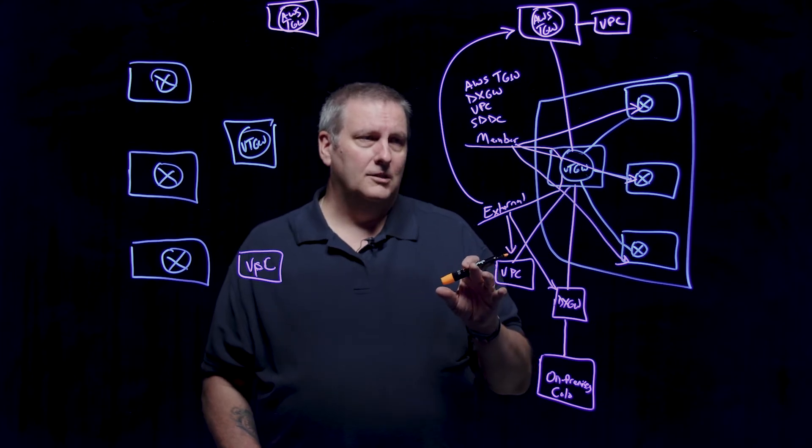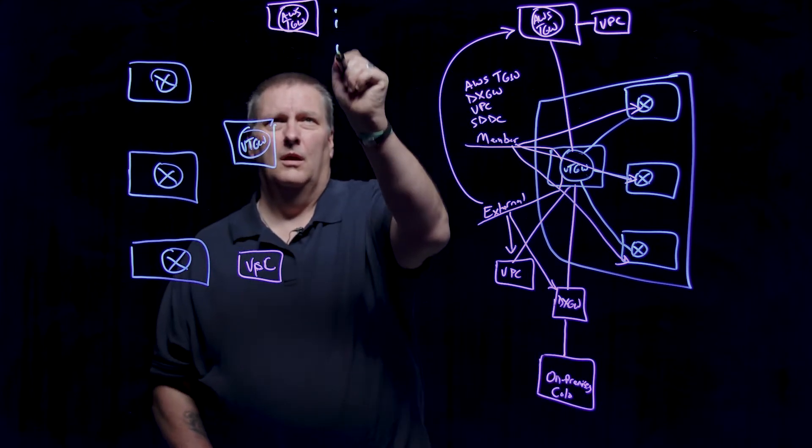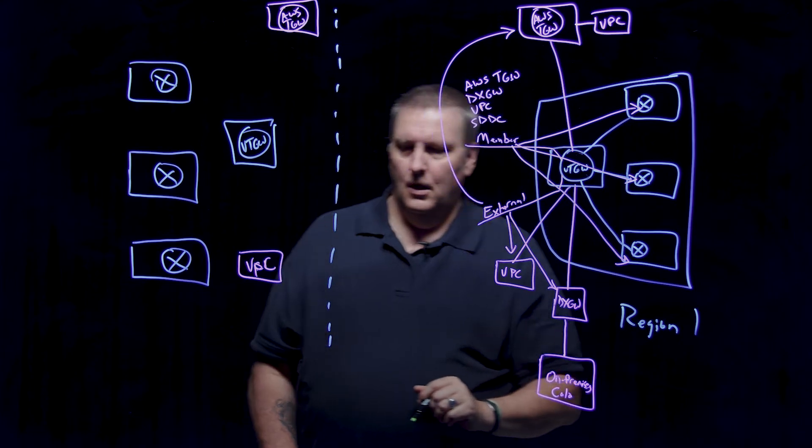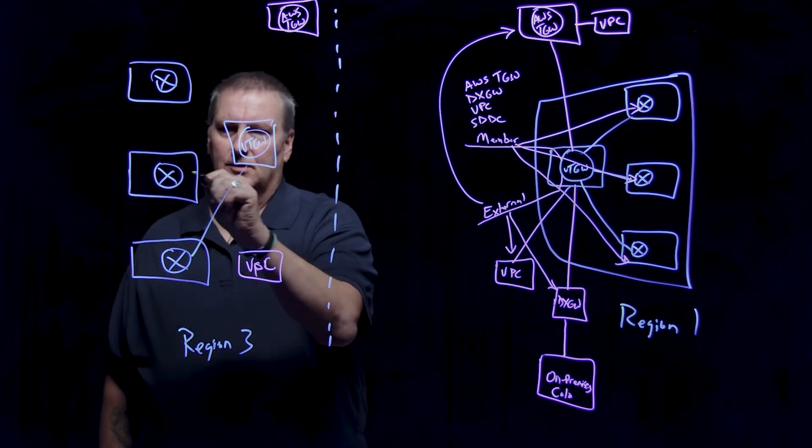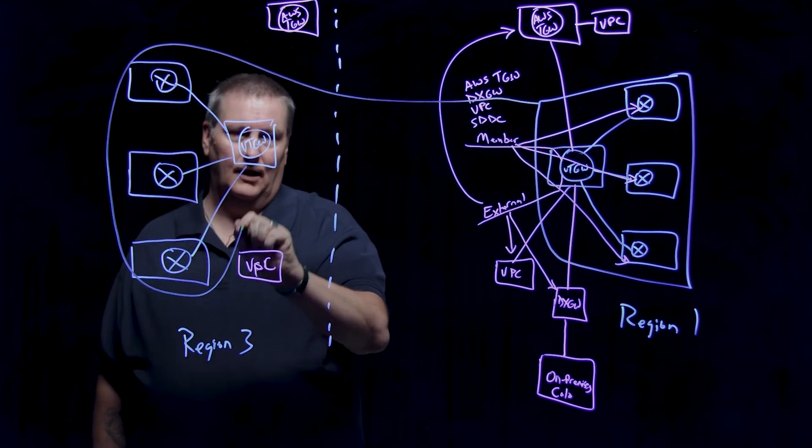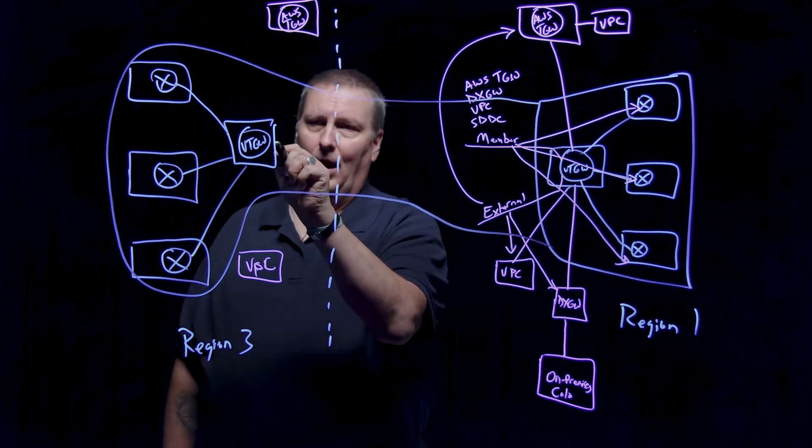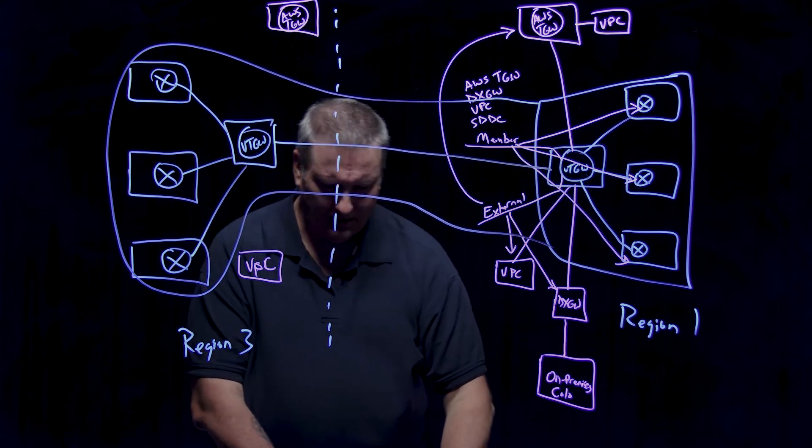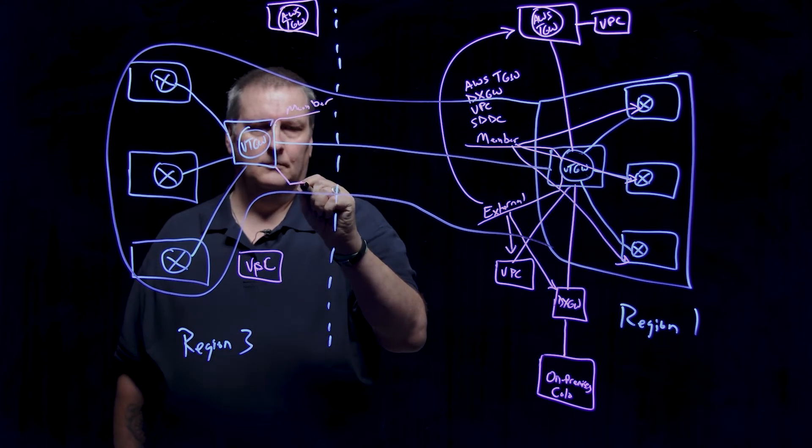Now, when we start to talk about extending the SDDC group concept, and now looking at it from the perspective of regions, let's say this is all region one, and over here we have region three, and we have a TGW that's instantiated, an SDDC group, and this is all part of the same SDDC group. Now we've got, again, kind of a big super group from that standpoint. We are going to automatically provision and configure the routes between the TGWs themselves, and we're going to still have that member and external route table. Same concept applies over here as well. We'll have member and external.